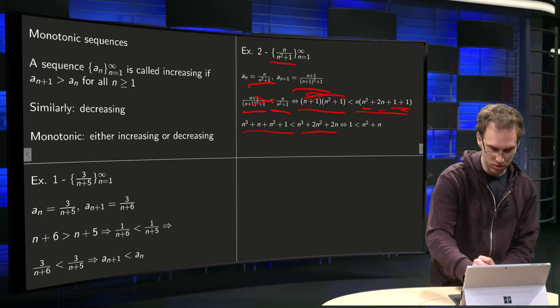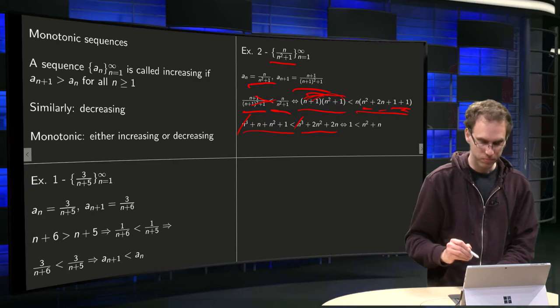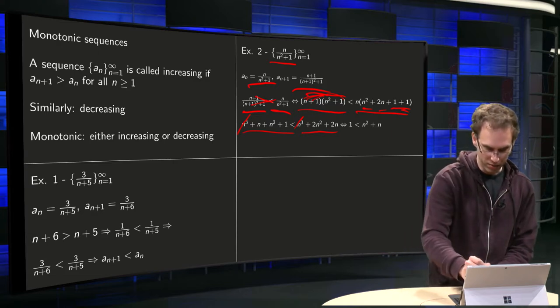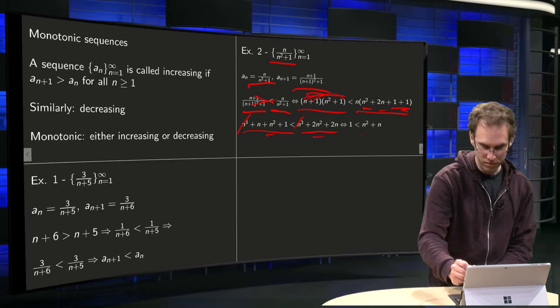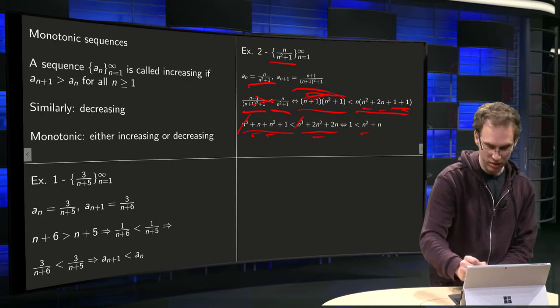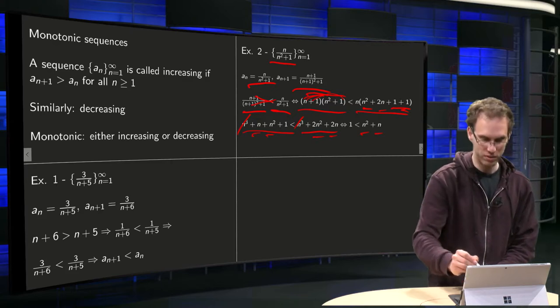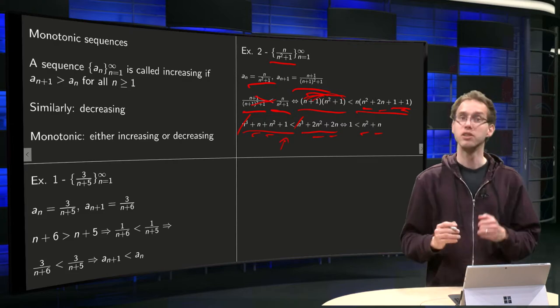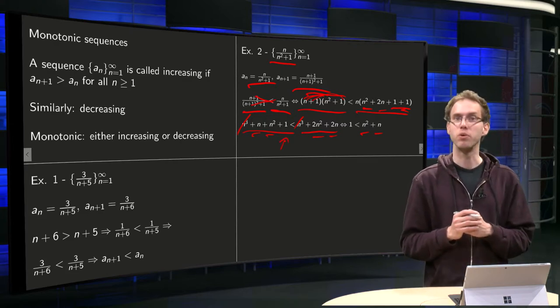Let's cancel out some terms. Those terms cancel out. And let's see, here we have a n² left, and here we have a n² and n left, and then only the ones left. So that's equivalent to 1 smaller than n² + n.